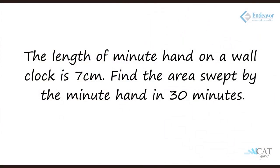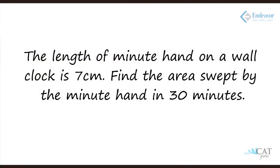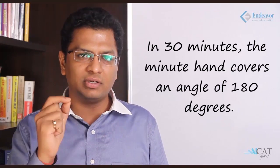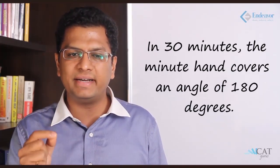Let's take the first example. The length of a minute hand on a wall clock is 7 centimeters. Find the area swept by the minute hand in 30 minutes. Now, the total number of minutes in an hour is 60, and the total degrees in a full circular cover is 360 degrees. So every minute is equal to 6 degrees. In 30 minutes, the arc covered is 30 into 6, which is nothing but 180 degrees.